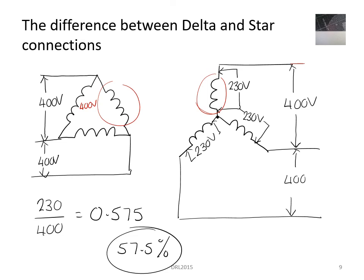Star-delta starting works like a gearbox: we connect the motor in star first, which lowers the phase voltage to 230 volts, and because the phase voltage is lower, the current is lower — just over half less — reducing the inrush current at startup. When it switches to delta, the voltage lifts to 400 volts, the current almost doubles, and you get a lot more power. The key difference is that in delta you have 57.5% more current through the windings than you would in star.